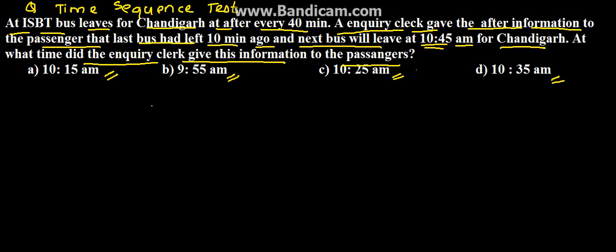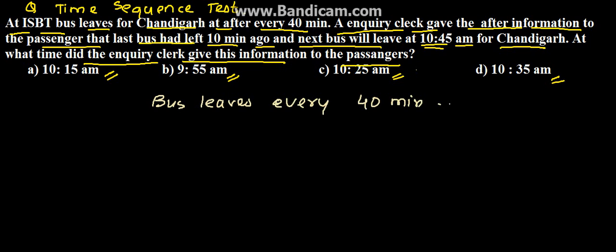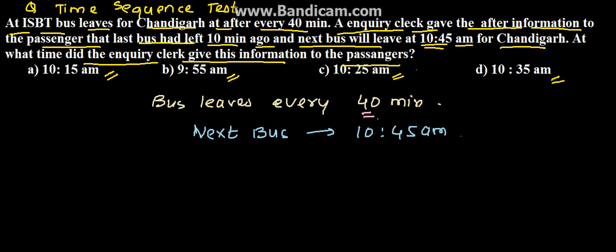We have been given that the bus leaves every 40 minutes. According to the clerk, the next bus will leave at 10:45 AM. That means the previous bus will be at 10:45 minus 40 minutes, which is 10:05 AM.